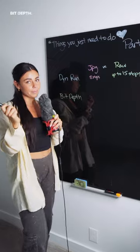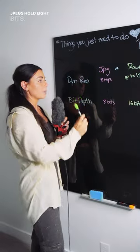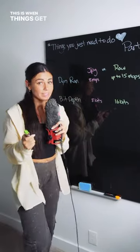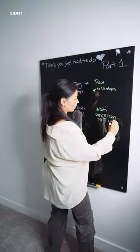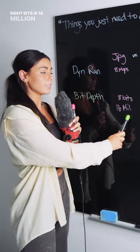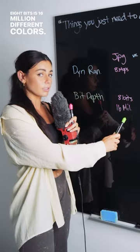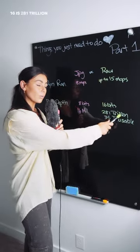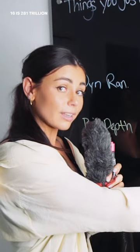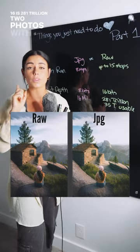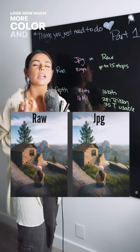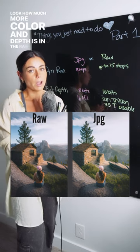Bit depth: JPEGs hold eight bits, RAW holds 16. This is when things get crazy — eight bits is 16 million different colors, 16 bits is 281 million. Two photos with the exact same edit — look how much more color and depth is in the RAW file.